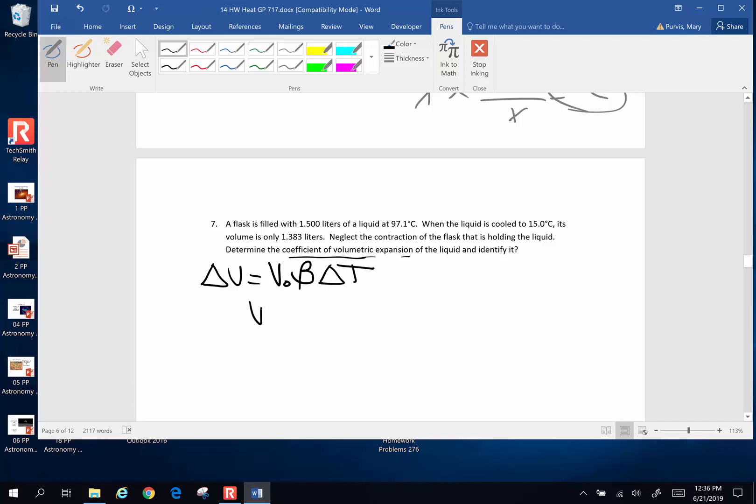So the original volume is 1.500 liters. The change in volume is going to be 1.500 liters minus 1.383 liters. So that's 0.117 liters. That's going to be my change in volume. We're looking for beta. What is going to be my change in temperature? Well, it's 97.1 down to 15.